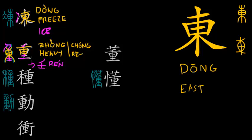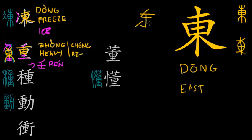By the way, the character shown is the traditional version of 东 ('east'). The simplified version is written differently, and the simplified version of 重 is also written in a simplified form.